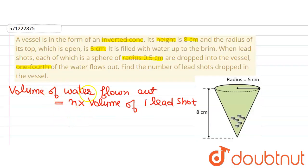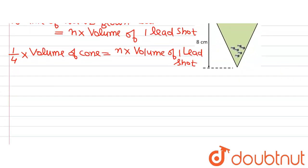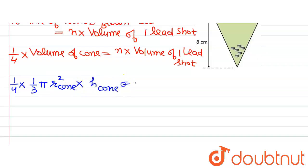The volume of water flowed out is, according to the question, 1/4 of the volume of the vessel, and the vessel is in the shape of a cone. So 1/4 of the volume of the cone equals n multiplied by the volume of one lead shot. Using the formula for the volume of a cone: (1/4) × (1/3)πr²h = n × (4/3)πr³, where the lead shot is spherical.